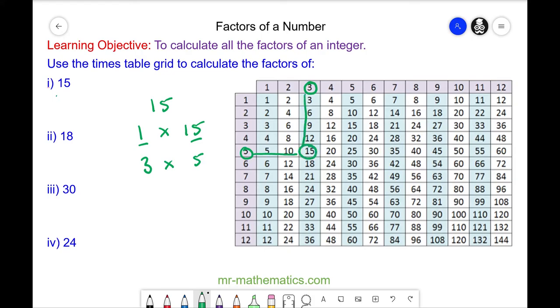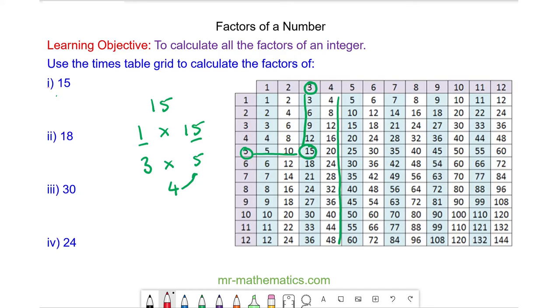So these are factors and because 4 is not a factor 15 does not appear in this times table. We know we've exhausted all the factors of 15 because there are no other numbers between 4 and 5. So the factors of 15 are 1, 3, 5 and 15.